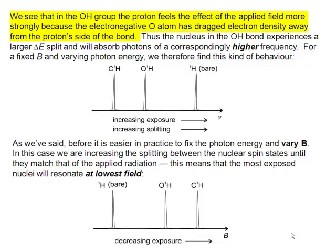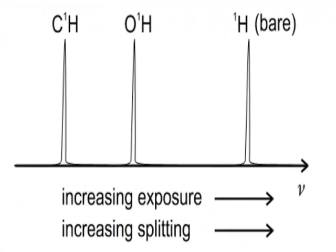That means, of course, there's still some electron density around it, so it's not as exposed as a bare nucleus, but it's less exposed than the CH here. So here we've got increasing exposure, and that correlates with increasing frequency of the transition.